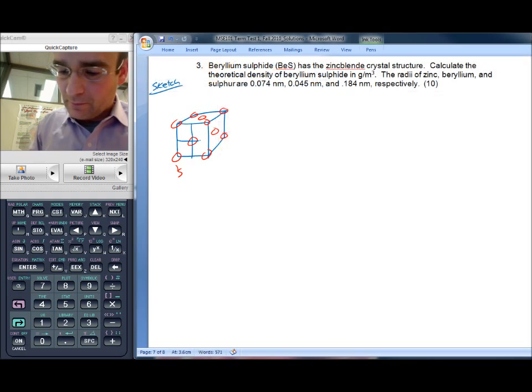And also on each of the faces is a sulfur atom. And what we can do to position the zinc atoms carefully is break it down into eight of these little subcubes.